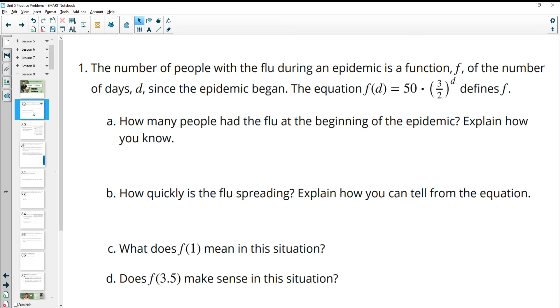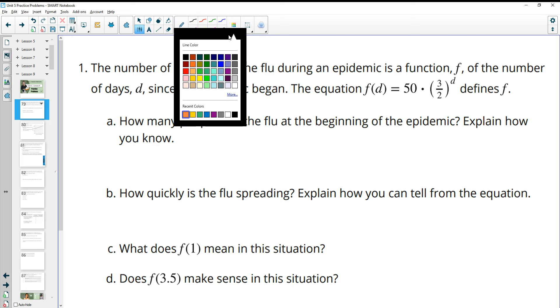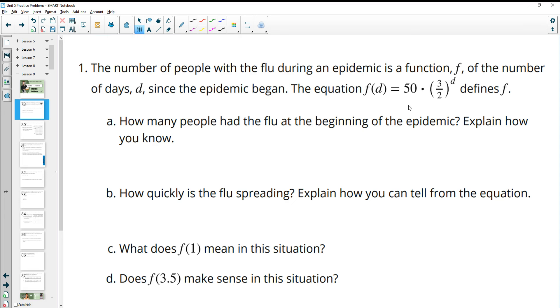Number one tells us the number of people with the flu during an epidemic is a function f of the number of days since that epidemic began. The equation here defines f. How many people had the flu at the beginning of this epidemic? So we know there's a couple ways to do this. One is, if it's at the beginning, just plug in zero for your variable. That would be the initial value. The other is, if you look at the equation, when we put zero in here, this whole section will be one. So that's just going to leave this first number here as our initial value. So 50 people is our initial amount.